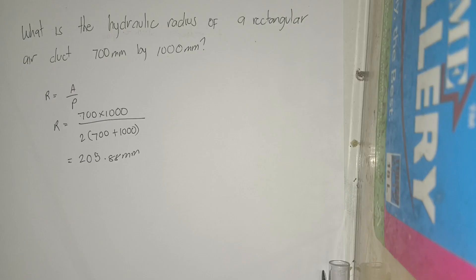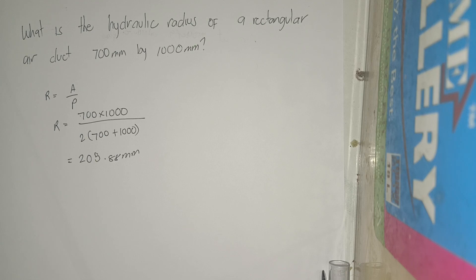What is the hydraulic radius of a rectangular air duct at 700 mm by 1000 mm? Since R is equal to cross-sectional area over perimeter, R is equal to 700 times 1000, over 2 times (700 plus 1000). If you solve it, we get 205.88 mm.